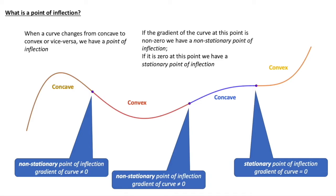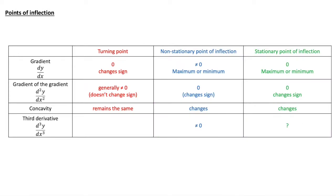Now we're going to think about the classification of these, which is slightly tricky. We're looking at the gradient dy/dx, the gradient of the gradient d²y/dx², concavity, and the third derivative d³y/dx³. For a turning point, the gradient will be zero and changing sign. The gradient of the gradient is generally non-zero for turning points, but it can be zero; either way it doesn't change sign.